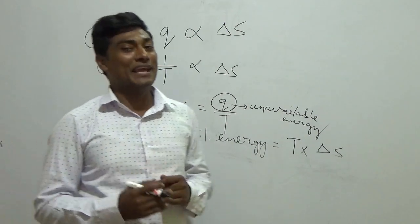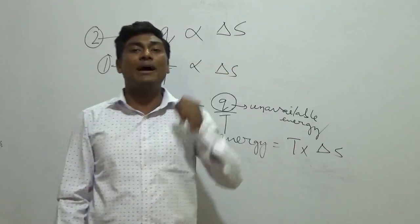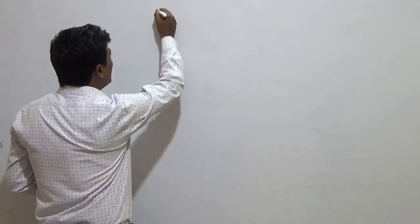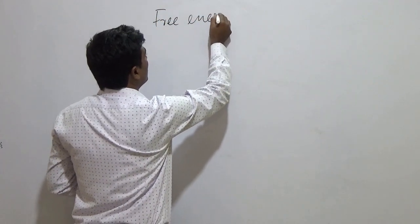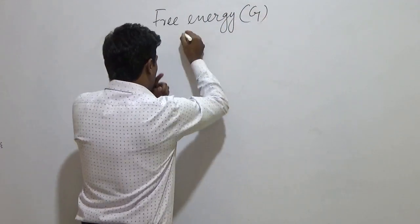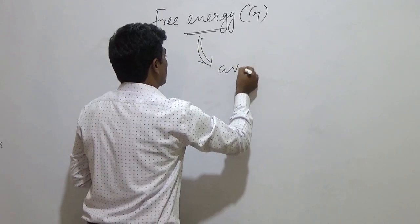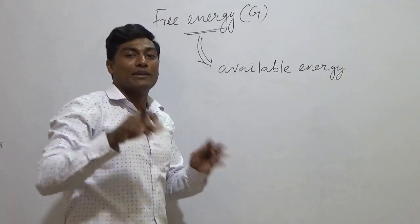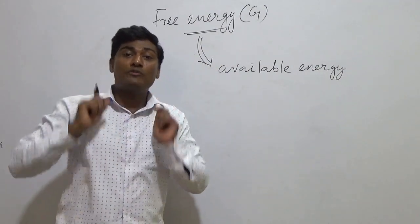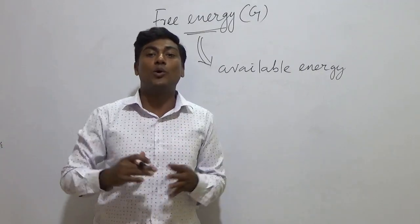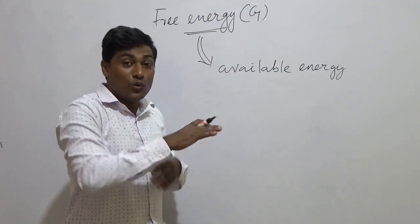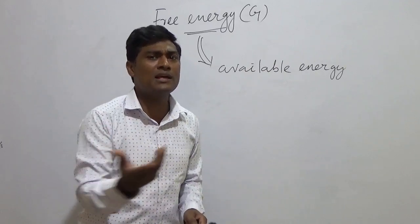Next, we will go to the free energy. Once we have the concept clear — what is available energy and what is unavailable energy — then we can clearly say what is free energy. Free energy, denoted as G, is nothing but the available energy. Where entropy was the unavailable energy, this is the available energy. The amount of heat supplied to a system cannot be wholly converted into energy. Whatever heat is supplied to a system, when you subtract the unavailable energy, the rest is the available energy.